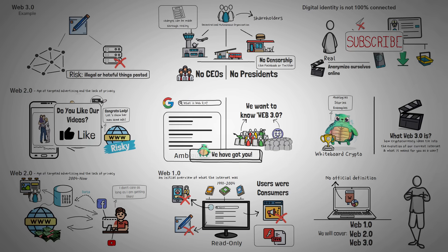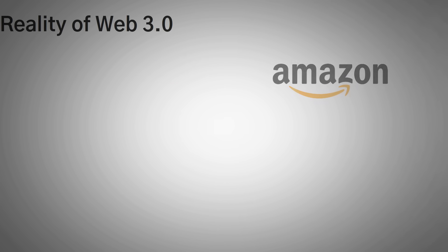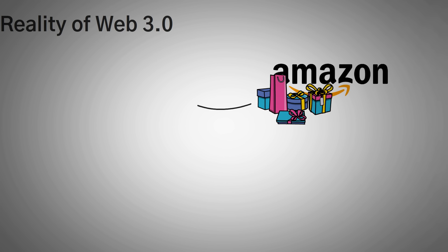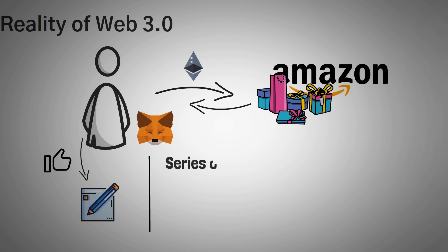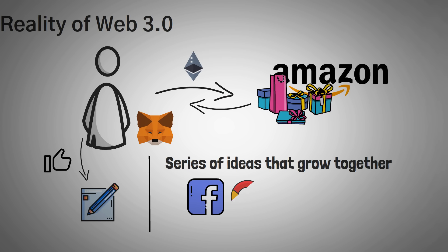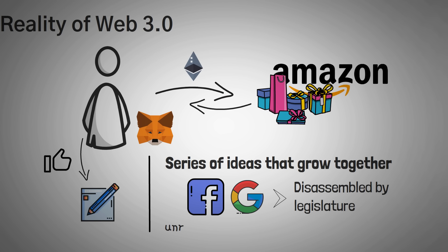These may be long-term ideas of those who think about Web 3.0. What Web 3.0 really means for us is that in the next decade, you might be able to buy Amazon gift cards using MetaMask and pay with Ethereum, or anonymously leave a like on a friend's post using one of your hidden wallets. It's not going to be a bunch of life-changing stuff all at once. It'll likely be a series of ideas that grow together until centralized companies like Facebook and Google are disassembled by legislature while decentralized, unregulated DAOs grow to replace them.